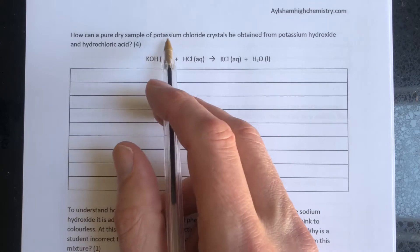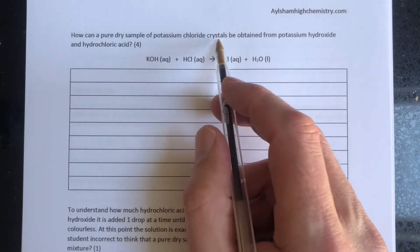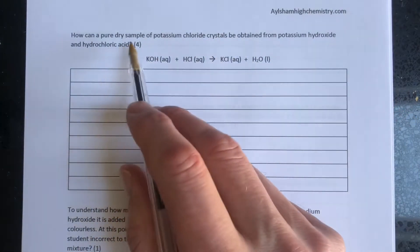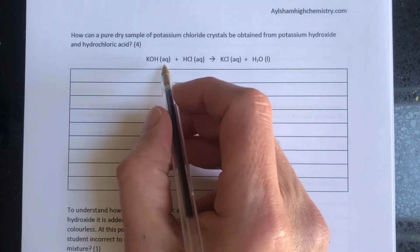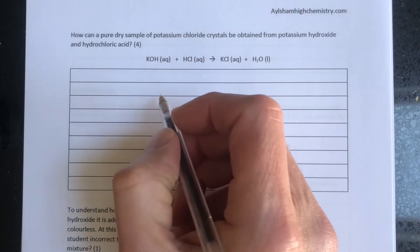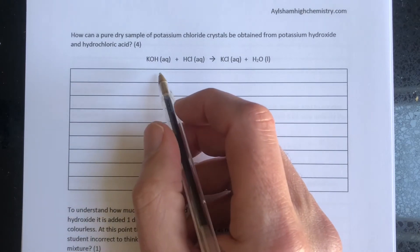How can a pure dry sample of potassium chloride crystals be obtained from potassium hydroxide and hydrochloric acid? The method we're going to use depends on the solubility of reactants and products.